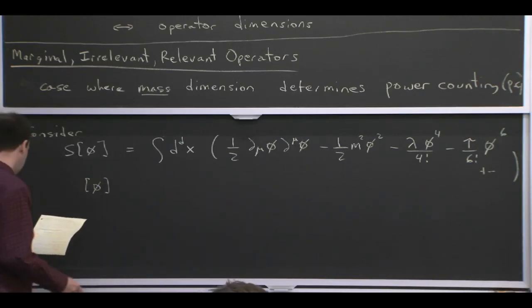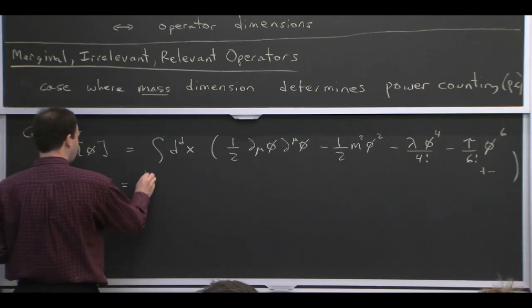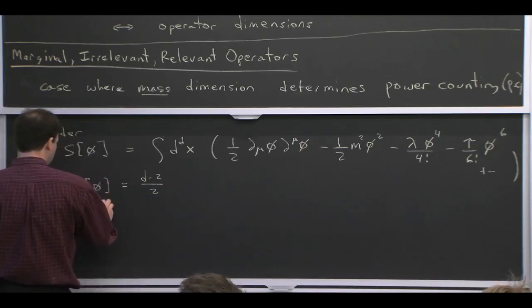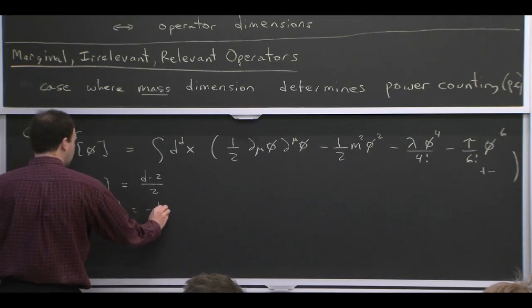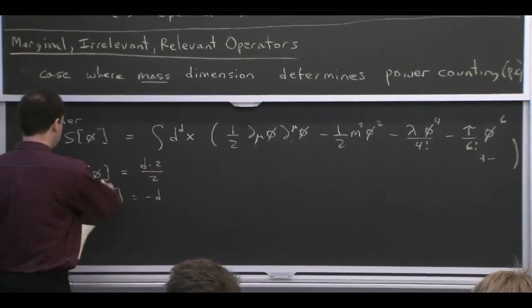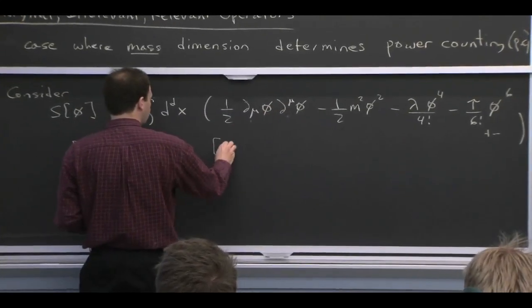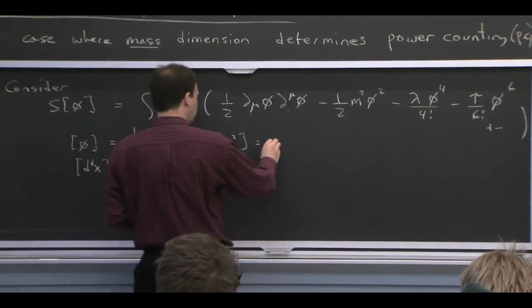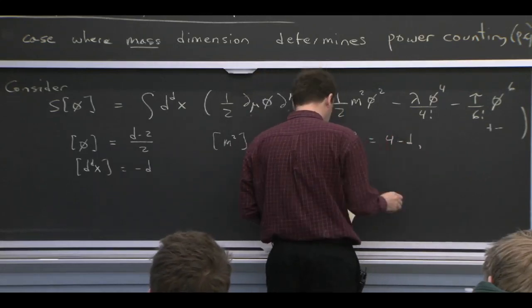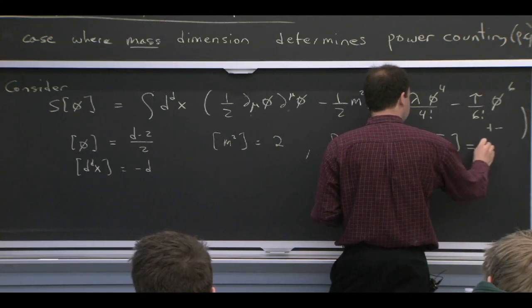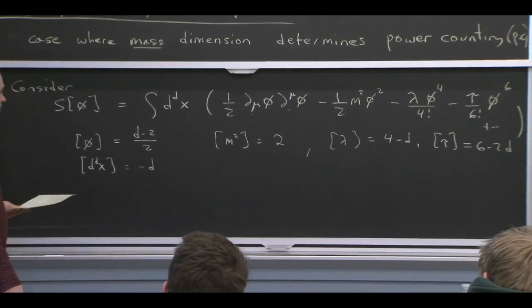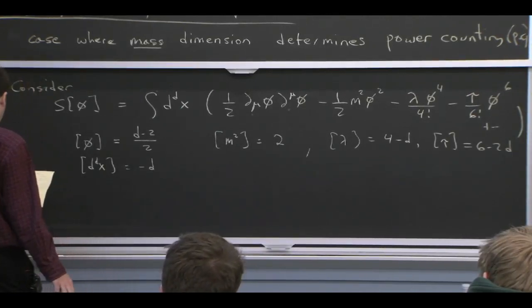So we can look at the dimensions of the various objects here. The action with our units is dimensionless. H bar and C are 1. So the mass dimensions of the field in d dimensions are d minus 2 over 2. Since the dimensions of d dx are minus d, we have to compensate for that and for the two derivatives. The canonically normalized kinetic term tells us what the dimensions of phi are. And then we can work out the dimensions of everything else. So mass squared dimension 2, tau dimension 6 minus 2d, lambda would be dimension 0 if d is 4. So hopefully somewhat familiar stuff.